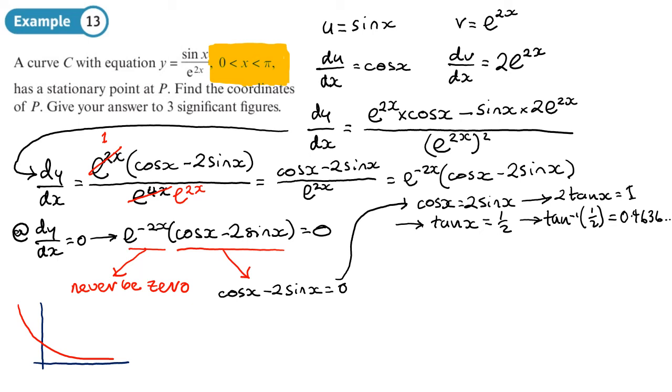Are there going to be any other solutions? It just says stationary point. I'm just going to check - if I draw a CAST diagram and I put on this angle here which I've got from my calculator, the other place I'm going to get that angle is here. Now that's going to be too big because that's going to be π plus 0.46..., so it's going to be too big. There is only one stationary point, but there may be questions where there may be more than one stationary point and we may get those by using the CAST diagram.